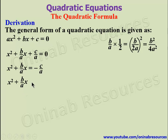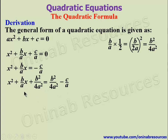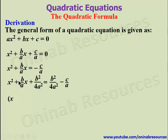So we now have x squared plus b over ax plus b squared over 4a squared, equal to b squared over 4a squared minus c over a. Since we added this to both sides, we now simplify. First we factorize the left hand side. Factorizing, we open bracket and pick x — what we have here is addition, so we bring in the addition.